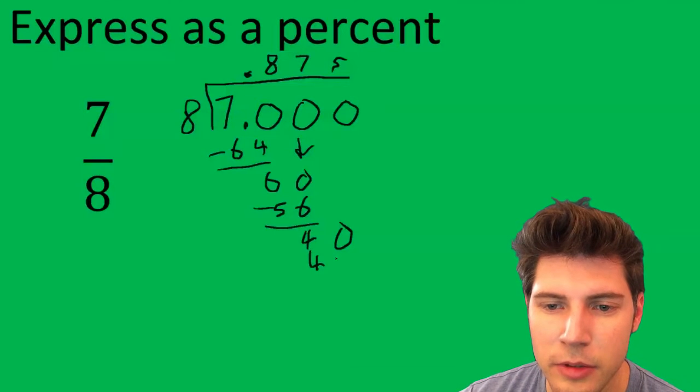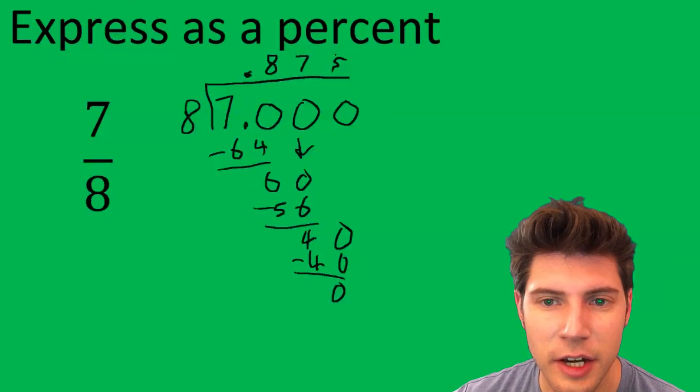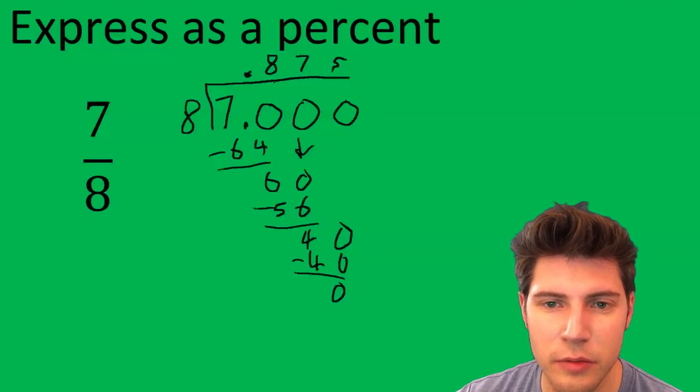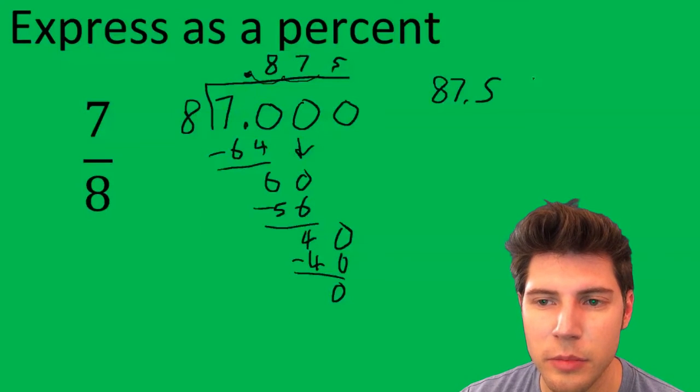And now it's done. So 0.875 is the decimal. And then to write this as a percent, we move the decimal over 2 places. And we get 87.5%.